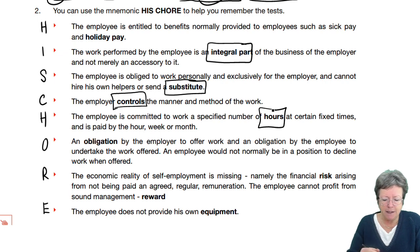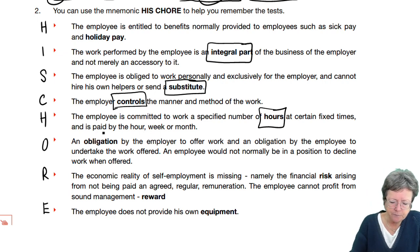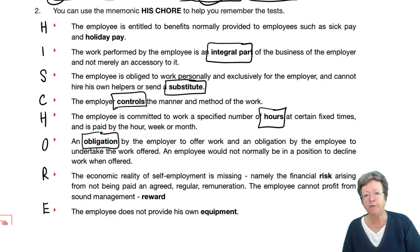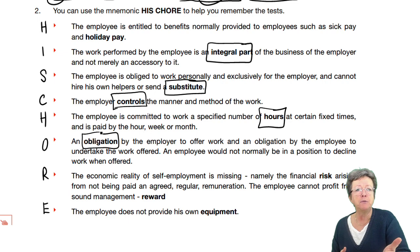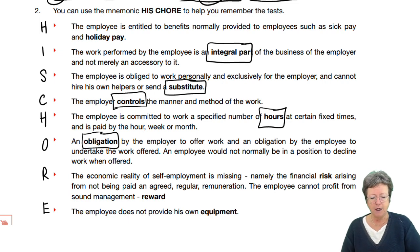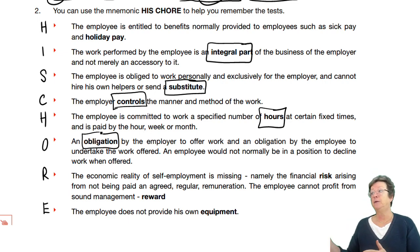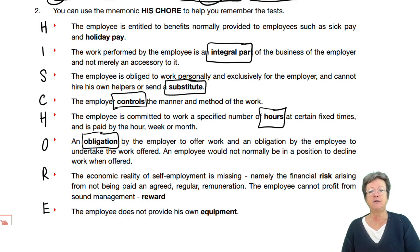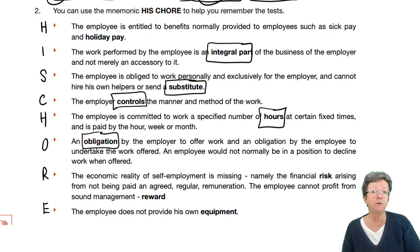O: Obligation. An obligation by the employer to offer work. So if you work for somebody, they're obliged to give you something to do, and you are obliged to do it because you've signed a contract to work for them. Normally you can't say 'I'm not doing that today' — that's definitely not something that would go down well with your employer.